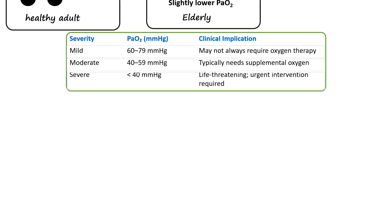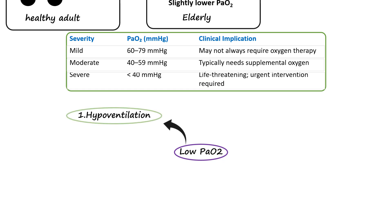Low PaO2 can occur due to various reasons, which can be grouped into five main categories based on the underlying physiological mechanism. The first category is hypoventilation, where reduced breathing leads to inadequate oxygen intake and carbon dioxide retention, commonly caused by conditions like drug overdose, neuromuscular diseases, or chest wall abnormalities. The second group involves ventilation-perfusion mismatch, where uneven air and blood flow in the lungs results in poor oxygenation, seen in pulmonary diseases such as COPD, asthma, pneumonia, and pulmonary embolism.